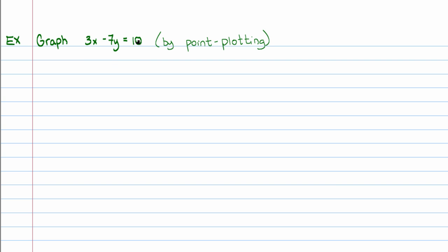When you're trying to graph an equation like this, there are a couple of things you can do. You can build a table of values — you have an x column and a y column, and then you would choose values either for x or for y. Often, we choose values for x. If I'm going to choose a value for x, like x equals 1, when my equation is written like this, I have to do this whole business: 3 times 1, because I'm letting x equal 1, minus 7y is equal to 10.